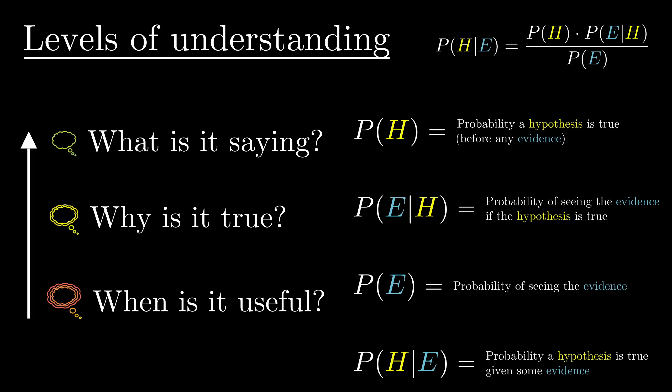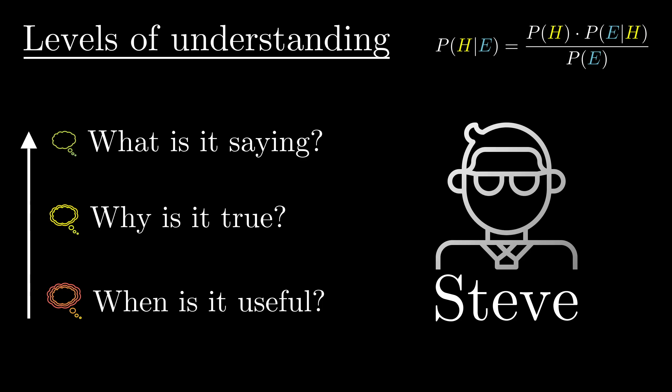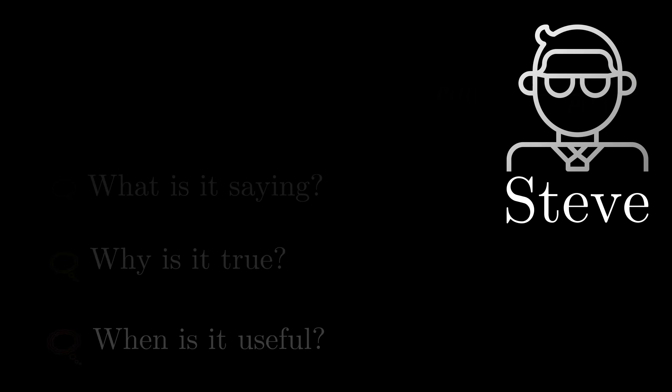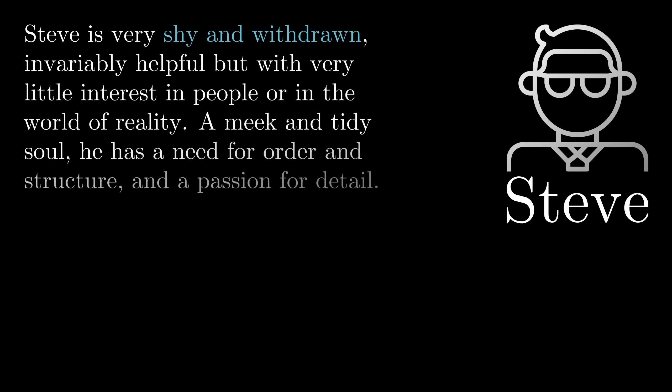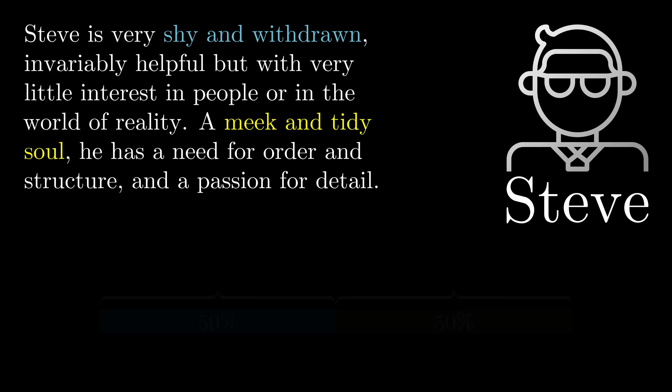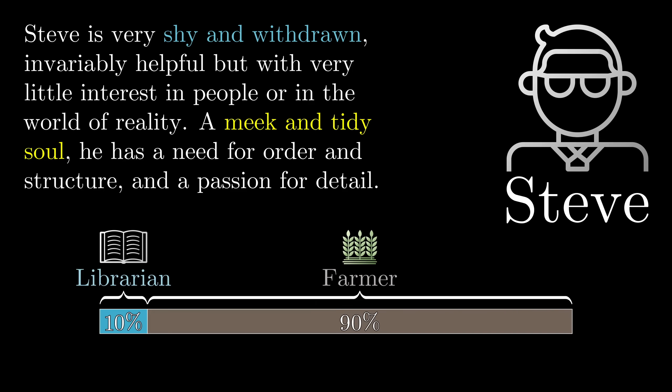So before dissecting the formula or explaining the visual that makes it obvious, I'd like to tell you about a man named Steve. Listen carefully now. Steve is very shy and withdrawn, invariably helpful but with very little interest in people or the world of reality. A meek and tidy soul, he has a need for order and structure and a passion for detail. Which of the following do you find more likely? Steve is a librarian? Or Steve is a farmer?